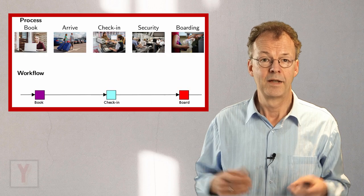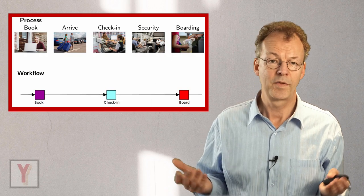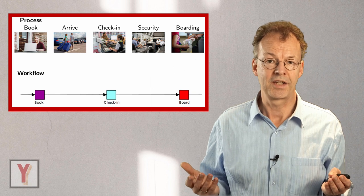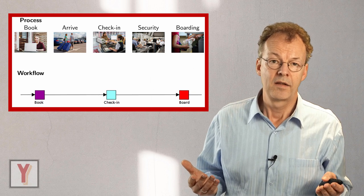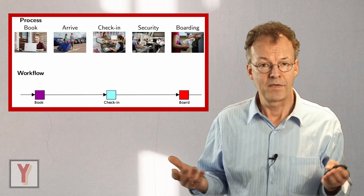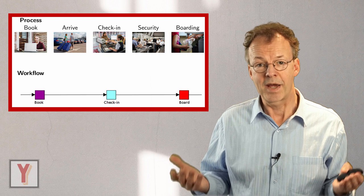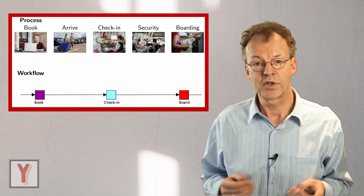An example is the business process of getting passengers on a plane. The process begins with the passenger booking a ticket. Then the passenger arrives at the airport, gets his baggage and goes to the check-in counter.